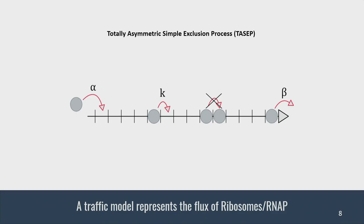The traffic model we use as the base is the totally asymmetric simple exclusion process, or TASEP. It's a traffic model where particles are going over a lattice with three important parameters: alpha, k, and beta — respectively the initiation rate, the elongation rate, and the termination rate. From those three parameters, we can get every property of interest in the model: the density over the lattice and the flux that you get for those rates.